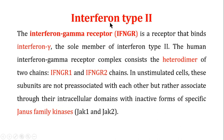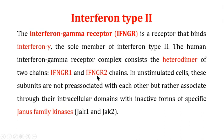Type 2 interferons interact with a special receptor known as the interferon gamma receptor. There is only a single type 2 interferon, known as interferon gamma. The human interferon gamma receptor is made up of two chains: interferon gamma receptor 1 and interferon gamma receptor 2. In unstimulated cells, these subunits are not pre-associated with each other; rather, they associate through their intracellular domains with the inactive form of specific Janus kinase family members.